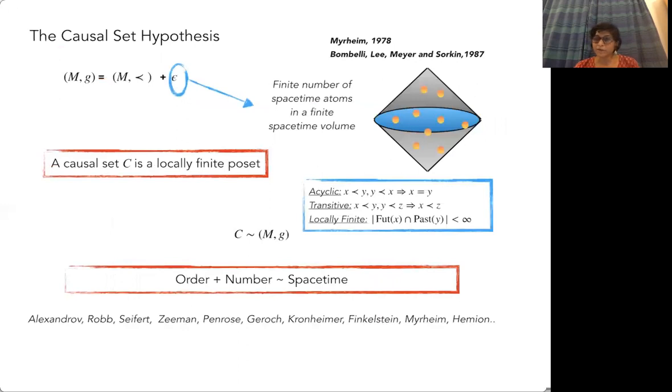This is the starting point for causal set theory. Instead of thinking about the metric and trying to quantize the metric, what about this causal structure POSET? There's a long history of people who started to think in this direction, and it culminated in the causal set hypothesis due to Bombelli, Lee-Meyer, and Sorkin. In this paper, the full hypothesis was laid out.